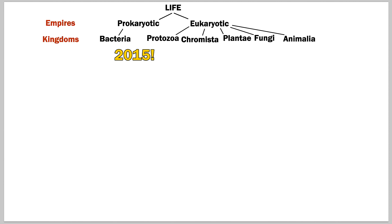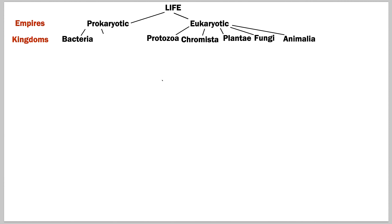We have six kingdoms in the 1998 representation, but in 2015 things changed to seven kingdoms. The expansion occurred under the prokaryotic section, where archaea was accepted into a kingdom of its own — just to avoid future confusion.